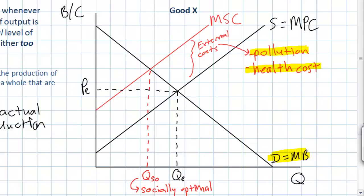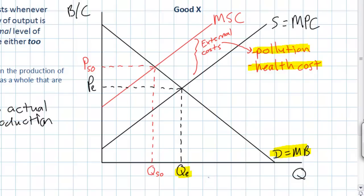If firms were to bear the external costs created by pollution and higher health care costs, the actual level of output would be lower than the free market equilibrium. However, since firms externalize these costs and do not face them, the firm's private costs of production are lower than they would otherwise be. Therefore the quantity actually produced, QE, is greater than the socially optimal quantity QSO. The price of the good, PE, will also be lower than the socially optimal price. This results in an overproduction of good x, where the socially optimal quantity is less than the quantity actually being produced.